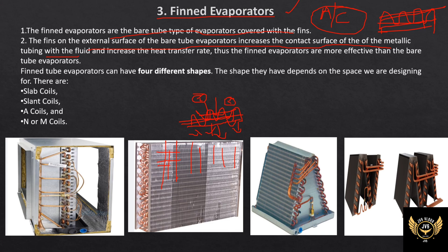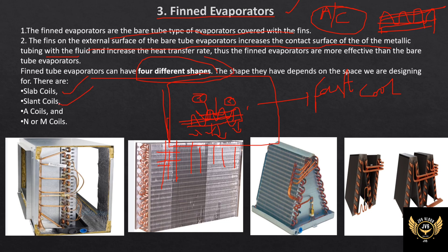The fins are in a straight line and made of aluminum. We have copper coil and aluminum coil, and the fins are also manufactured from aluminum. The fin tube evaporators have four types: slab coils, slant coils, A coils, and NRM coils. In slab coils, the copper coils are in a side position. In slant coils, they are in a somewhat inclined position.